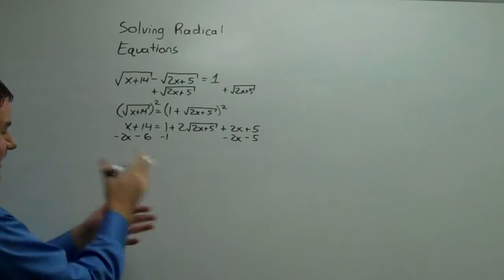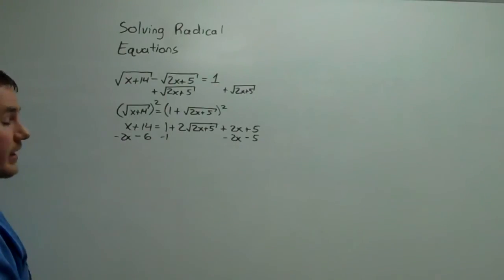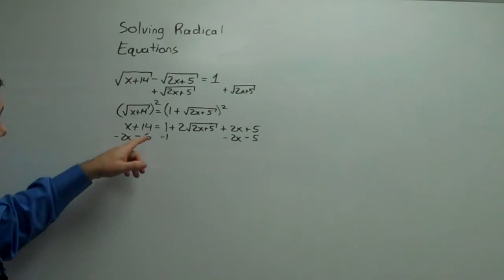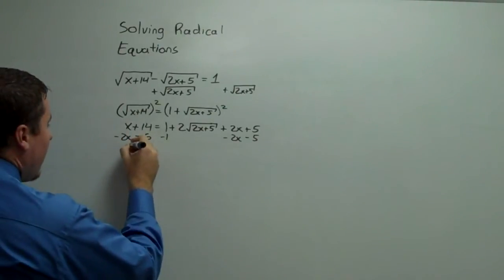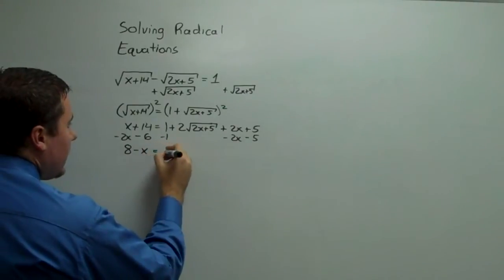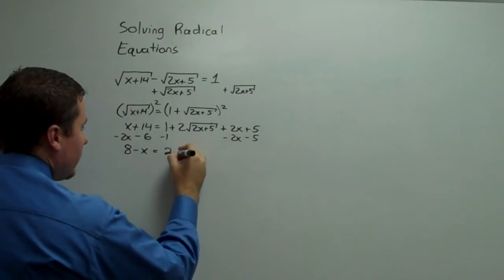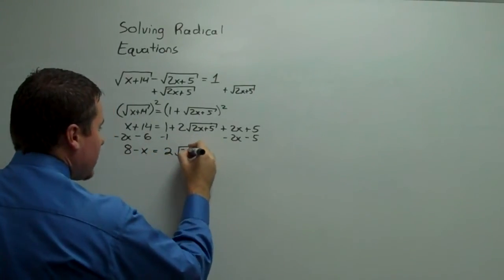So on the left side, I'm going to change the order a bit so that I can keep something positive. So this is going to be 8 and negative x. So 8 minus x equals 2 radical 2x plus 5.